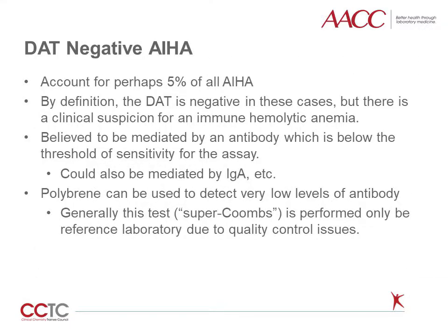DAT-negative autoimmune hemolytic anemia is really a diagnosis of exclusion. This diagnosis indicates that the clinical suspicion for immune hemolysis is high, but that the DAT is negative. One important possibility to consider is that the DAT would be positive if additional reagents, such as anti-IgA, were available for clinical testing. Another possibility is that complement or IgG are present on the surface of the cell but at concentrations too low to be detected by commonly available testing systems. Some centers perform a super-Coombs test to confirm this diagnosis, although very few labs are able to perform this testing in-house due to the difficulty of procuring appropriate positive and negative controls.